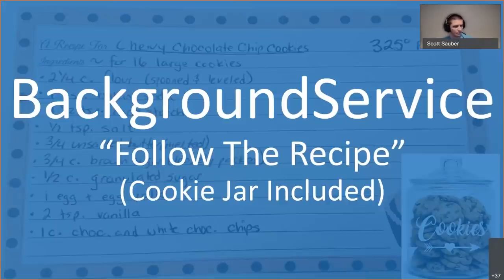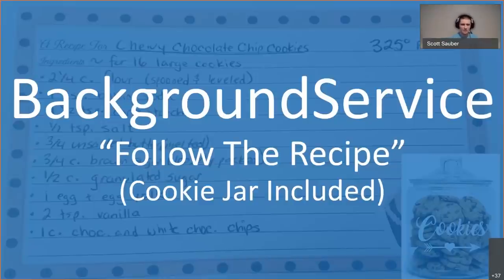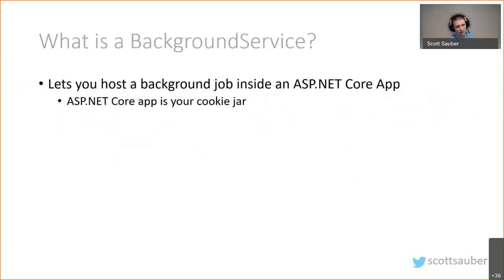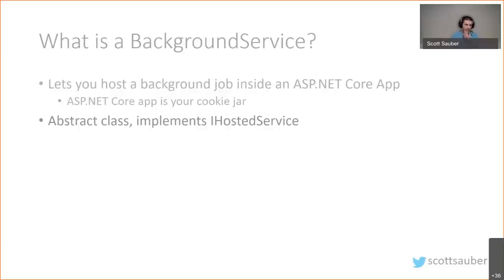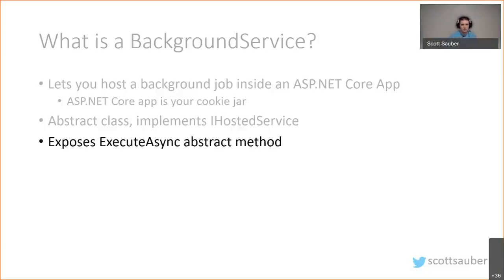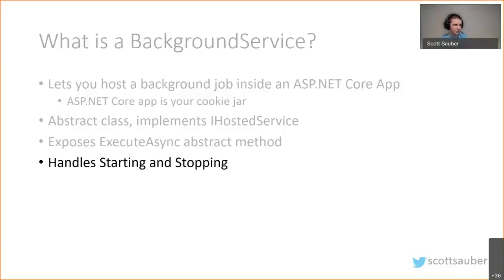BackgroundService is like the follow-the-recipe example — you have a recipe to follow rather than raw ingredients, and the cookie jar (ASP.NET Core) is included. BackgroundService is an abstract class that implements the IHostedService interface and exposes an ExecuteAsync abstract method for your custom code. BackgroundService handles some of the starting and stopping logic with cancellation tokens, so you don't have to worry about those details.